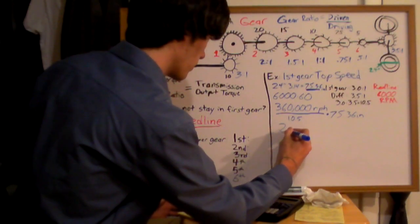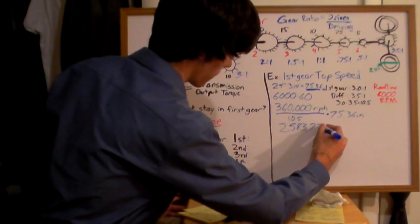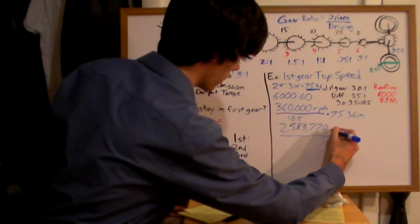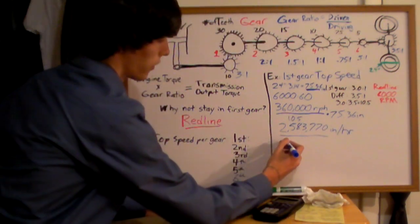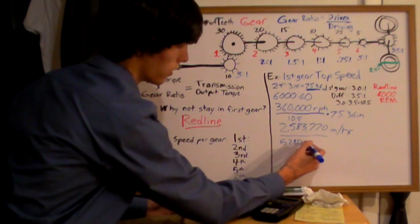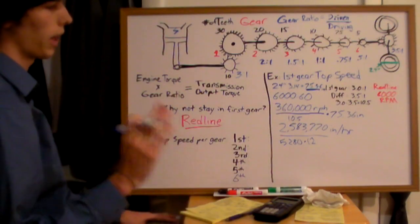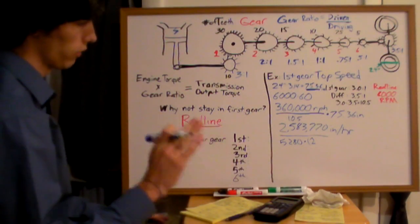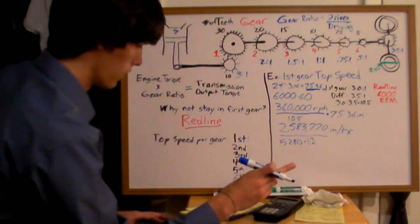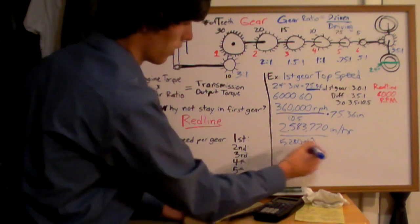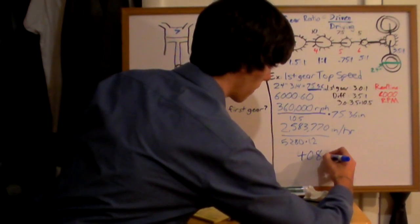That comes out to 2,583,770. Alright, so there's 5,280 feet in a mile, there's 12 inches in a foot, so you're going to divide this 2,580,000 inches per hour by the amount of inches in a mile. This is going to give you miles per hour. Now once you take this, 2,583,000 divided by 63,360, that's going to give you a total of 40.8 miles per hour.